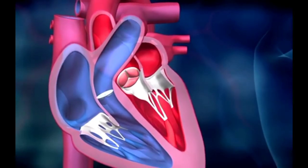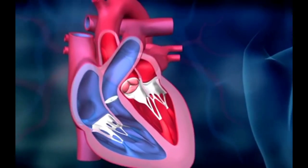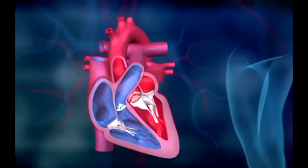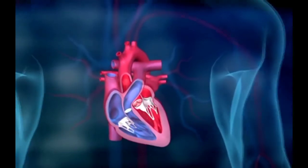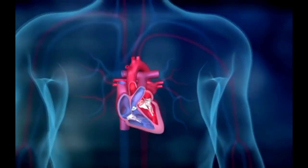The aortic valve quickly closes to prevent back flow of blood into the left ventricle. At the same time, a new contraction takes place in the right ventricle and the systemic circulation begins anew.